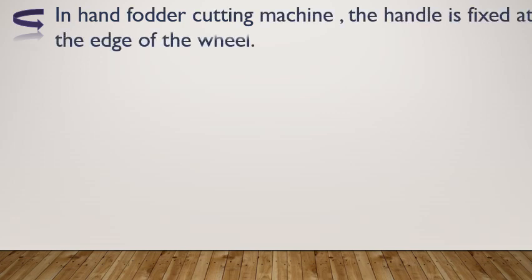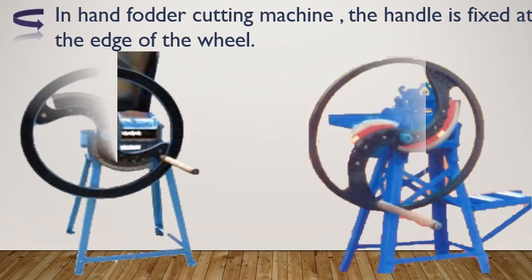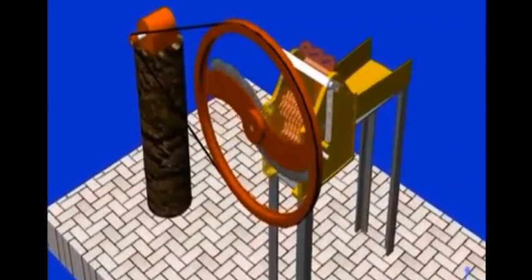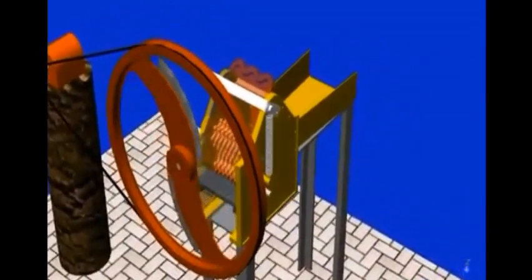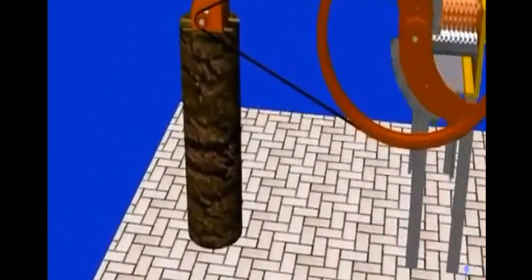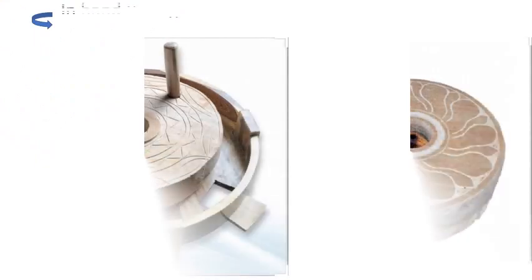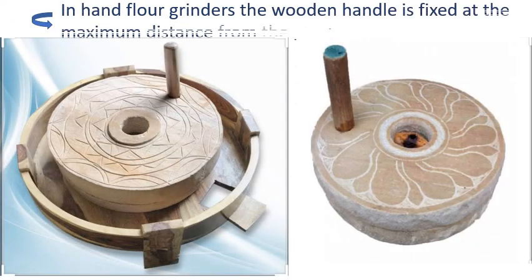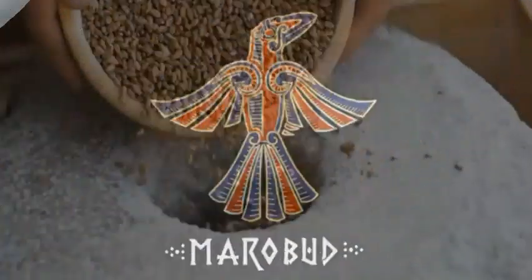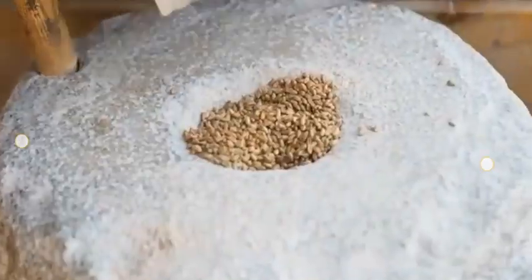Now let us see some more practical examples to clear our concept about the moment of force. This generates maximum moment of force, i.e., maximum turning effect is produced by applying a very minimum effort by the person using the cutting machine. The next example is of the hand floor grinders, which are commonly known as chakki. The upper circular stone of the grinder is provided with a wooden handle fixed at the edge — so that there is maximum distance between the handle and the turning point which is at the centre. By increasing the distance, the moment of force is increased and it becomes easy to produce turning with minimum effort.